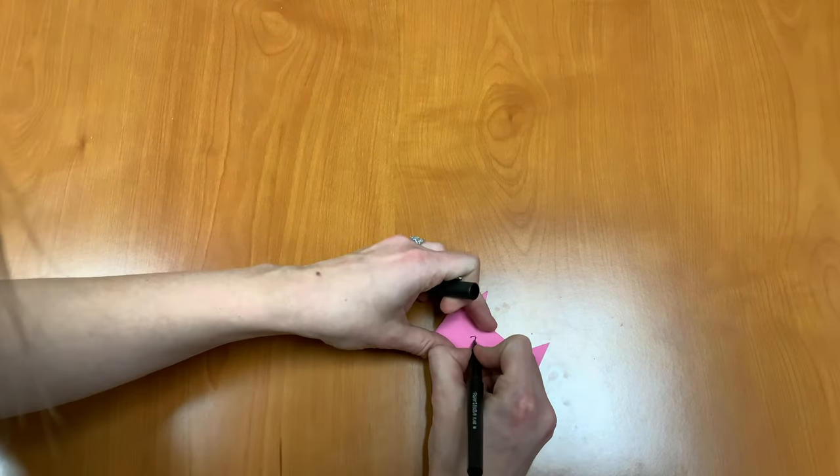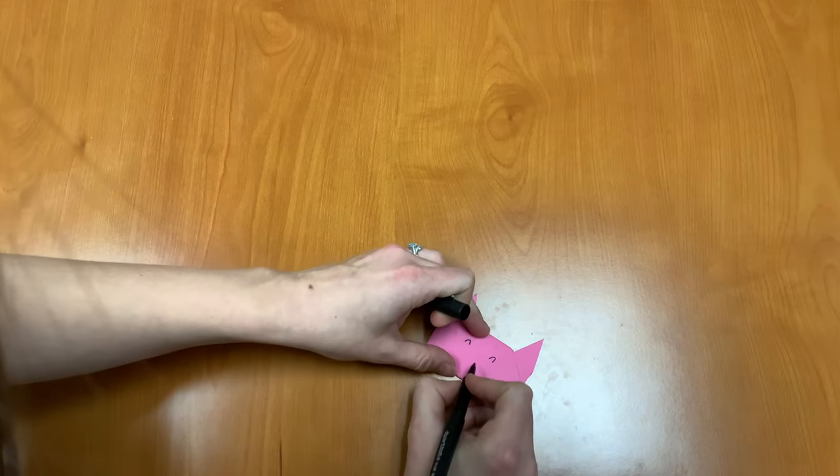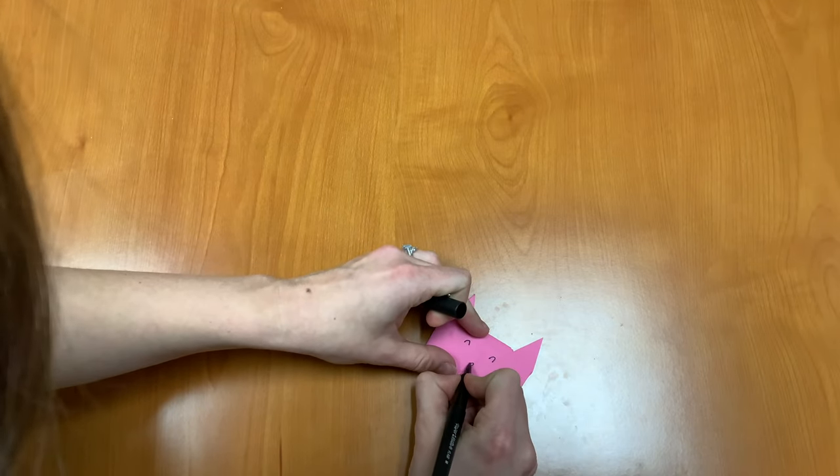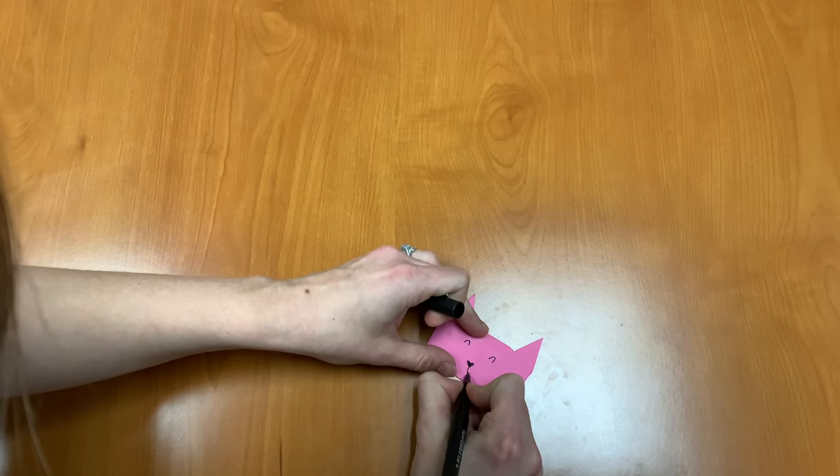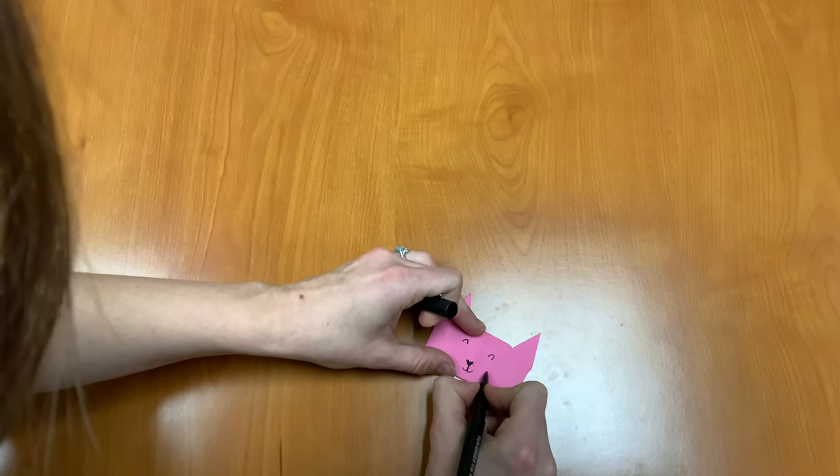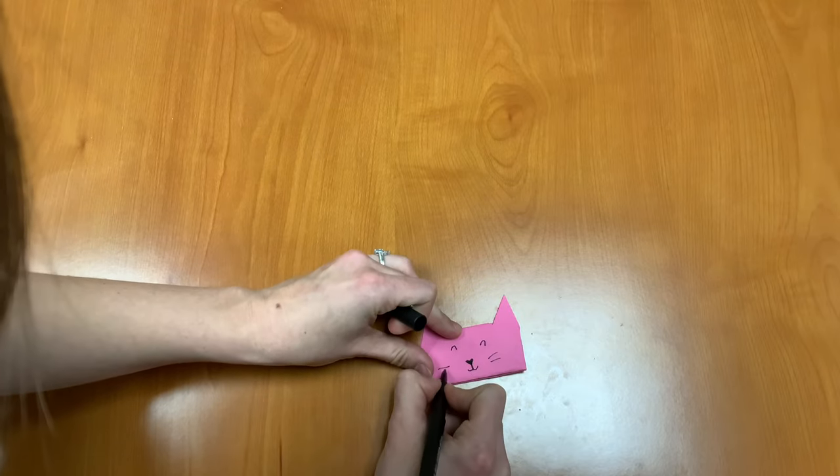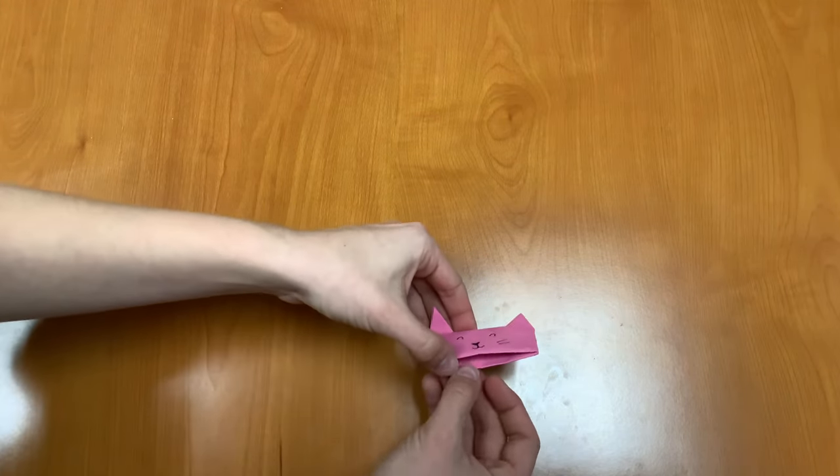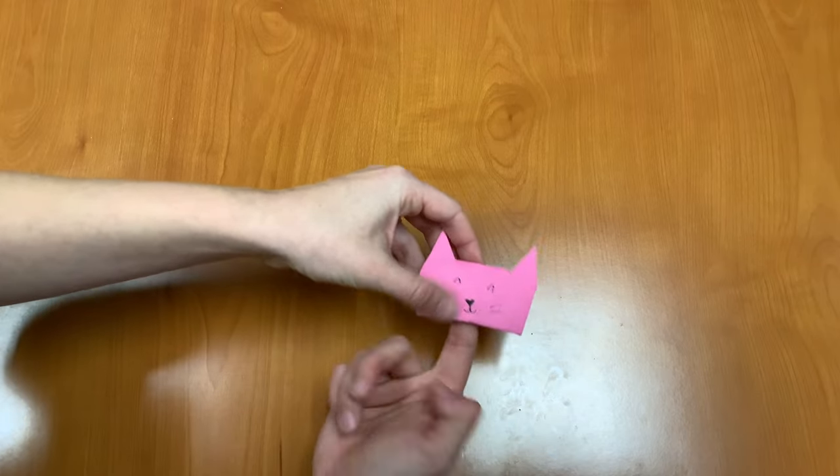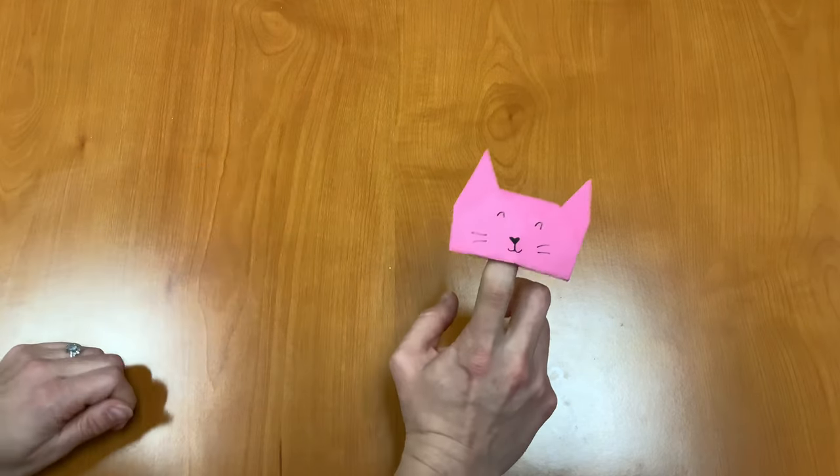So I'm going to do two little eyes, a little heart shaped nose, a mouth, some whiskers. And now you can open the bottom of your puppet and stick it on your finger. And you have an origami puppet.